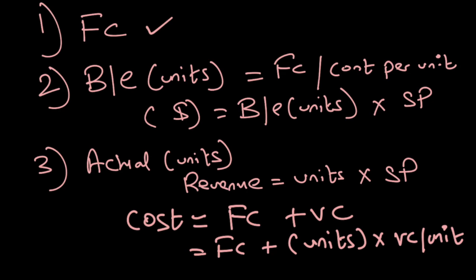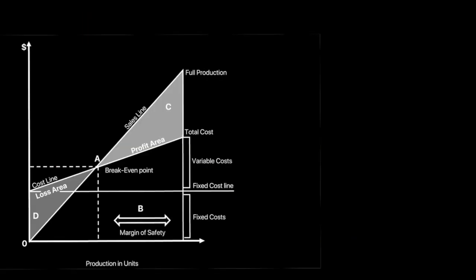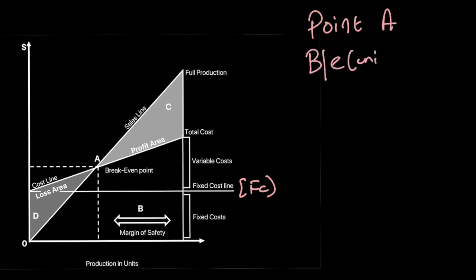If you have these three points, you should be able to draw this graph. Let's go back to the graph to refer to these points. First, draw the horizontal line for your fixed cost. Then locate Point A — the breakeven point — by plotting the breakeven in units on the x-axis and breakeven in dollar terms on the y-axis. Then plot your actual revenue at your actual output.